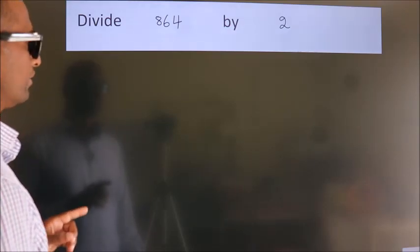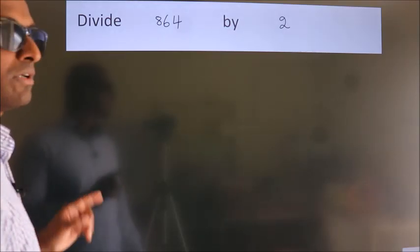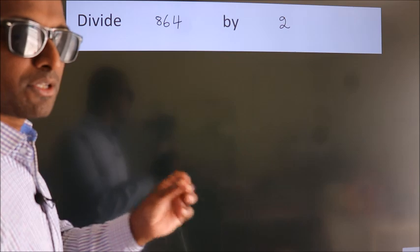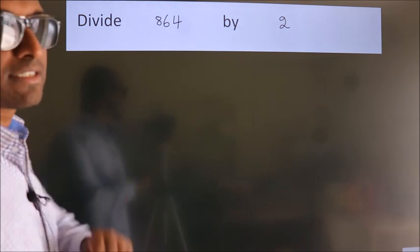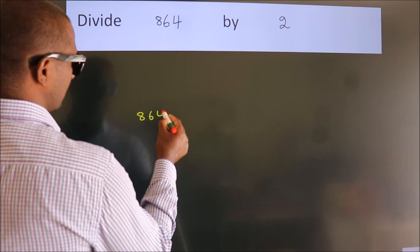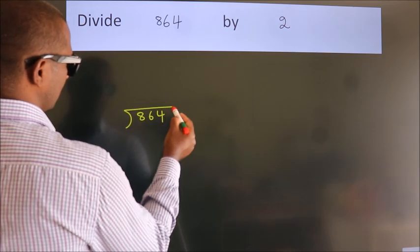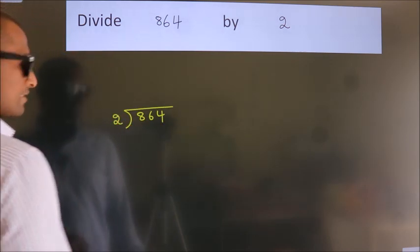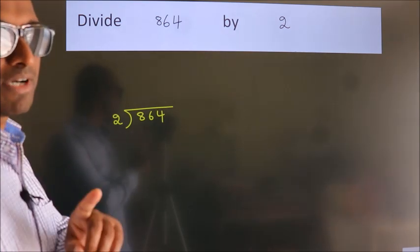Divide 864 by 2. To do this division, we should frame it in this way. 864 here, 2 here. This is your step 1.